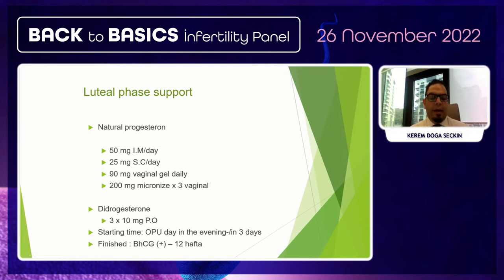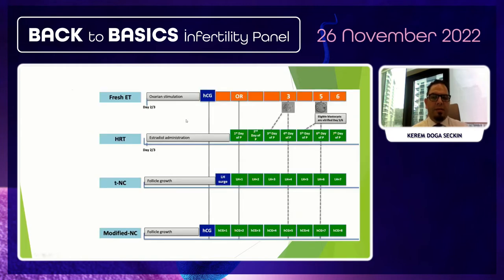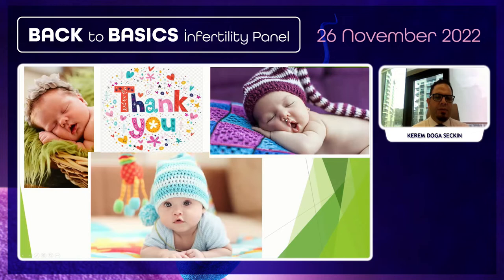Progesterone support is continued until 12 days after a positive HCG test in fresh transfer cycles. Options include fresh embryo transfer, hormone replacement cycle, natural cycle, and modified natural cycle. Embryo transfer timing is based on the embryo stage. Thank you very much for your consideration and attention.